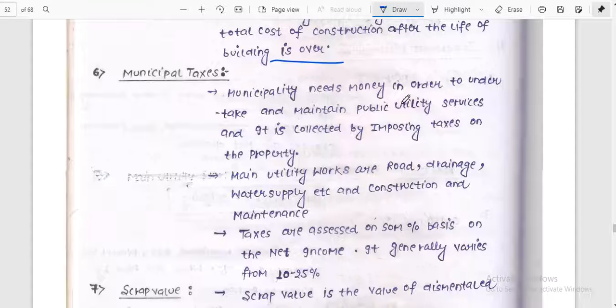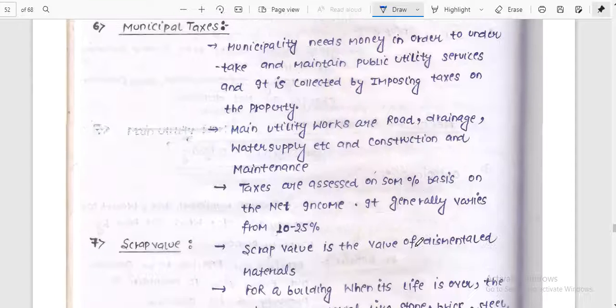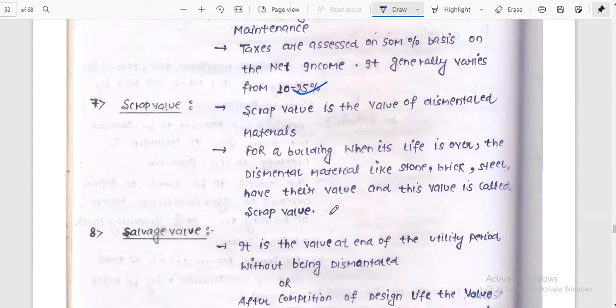Municipal taxes. Municipality needs money in order to undertake and maintain the public utility service and is collected by imposing tax on the property. Main utility works are road, drainage, water supply, sanitation, construction and maintenance. Tax or assessment percentage based on net income generally varies from 10 to 20 percent. Then scrap value is important.